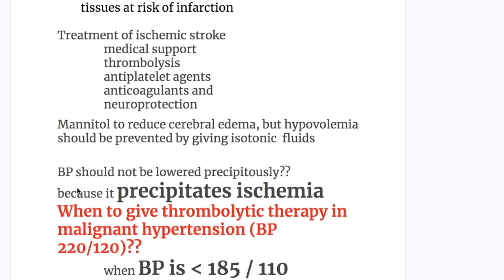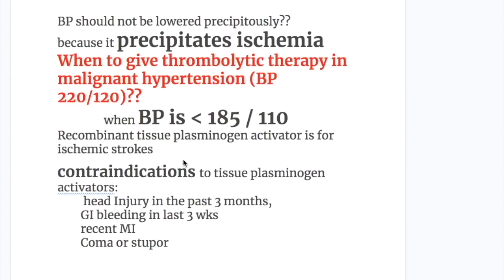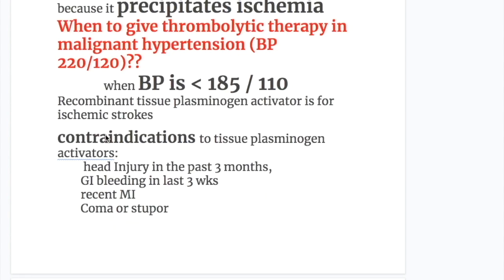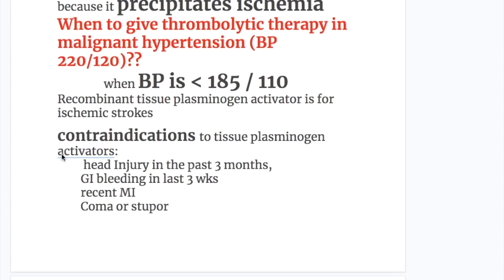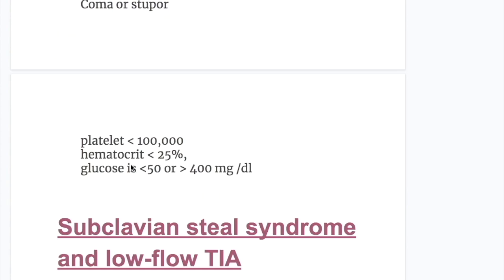Treatment of ischemic stroke includes medical support, thrombolysis, antiplatelet agents, anticoagulants, and neuroprotection. Mannitol may reduce cerebral edema, but hypovolemia should be prevented by giving isotonic fluid. Blood pressure should not be lowered precipitously as it precipitates ischemia. Recombinant tissue plasminogen activator is used for ischemic stroke; contraindications include head injury in the past three months, GI bleeding in the past three weeks, recent MI, coma or stupor, platelet count less than 100,000, hematocrit less than 25%, or glucose less than 50 or more than 400 mg per 100 mL.